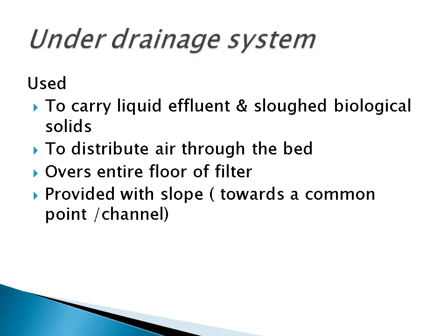The fourth important element is the under drainage system, which is used to carry the biomass and also the liquid effluent out through the effluent pipe. Through the under drainage system, the liquid effluent and the biomass are sent through the outlet pipe of the trickling filter. It also distributes air through the bed. The under drainage system covers the entire floor of the filter and is generally provided with sufficient rockers.